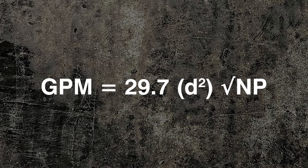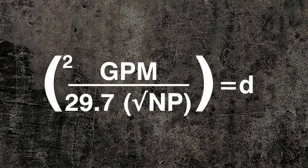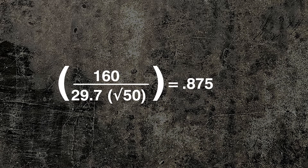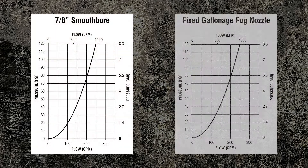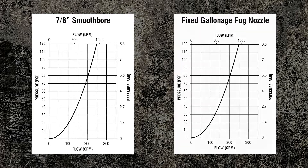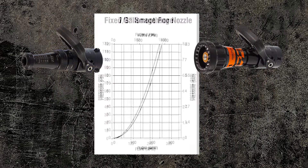This is to be expected. If you use the flow formula from Video 2, How a Nozzle Works — Smoothbore, and solve for D, it will reveal that this particular fixed gallonage nozzle is equivalent to a 7/8 inch smoothbore. In this example, our 7/8 inch smoothbore matches the fixed gallonage nozzle along the flow and pressure curves.